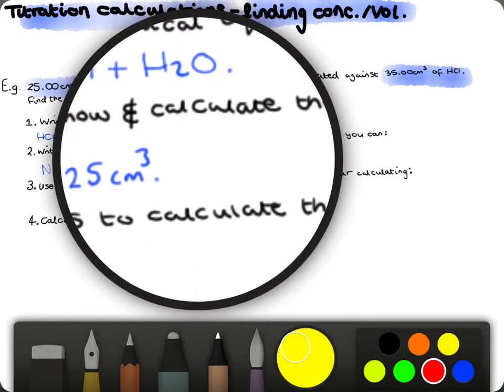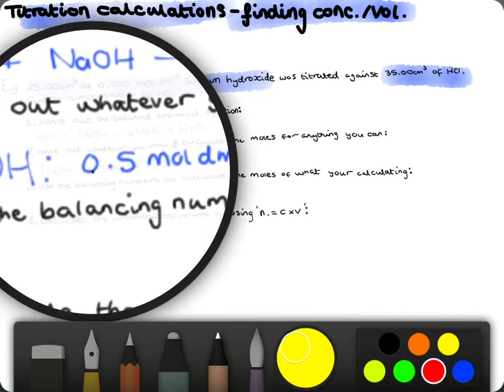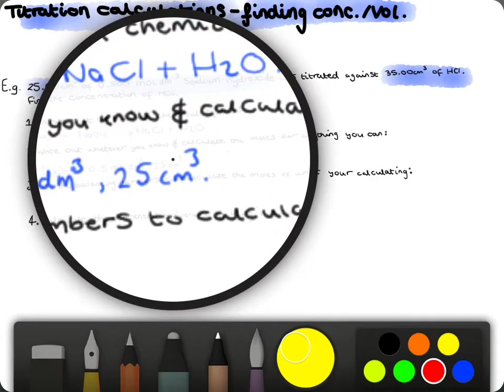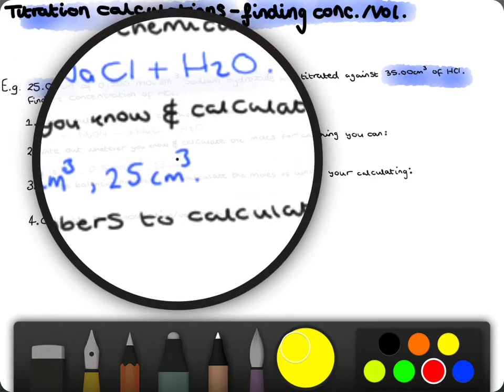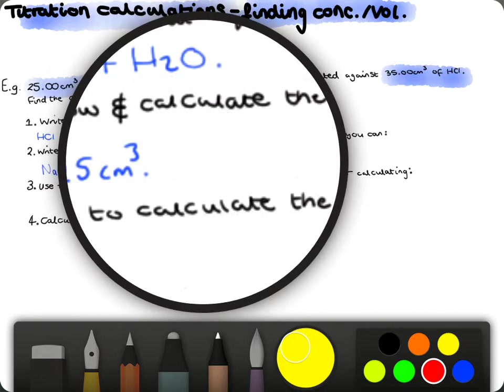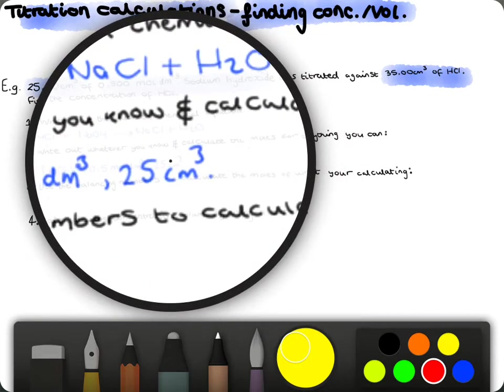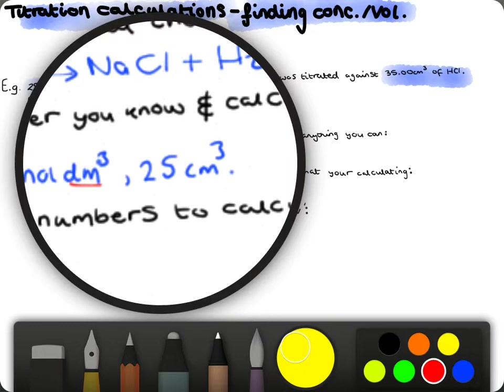I'll do this in red. And that's just simply timesing the two together, because remember, concentration times volume gives us number of moles. But don't forget to convert that cm³ into decimetre cubed, because we need to work in decimetres.